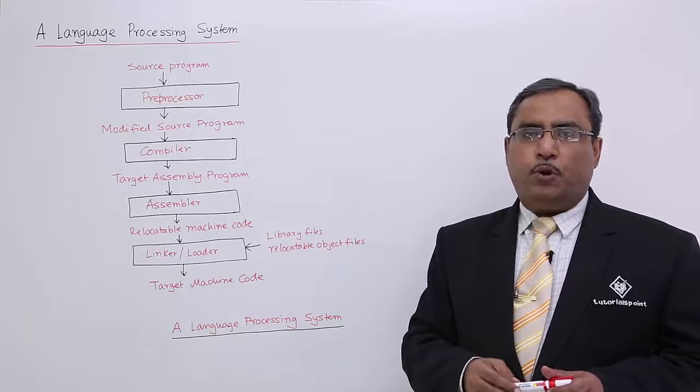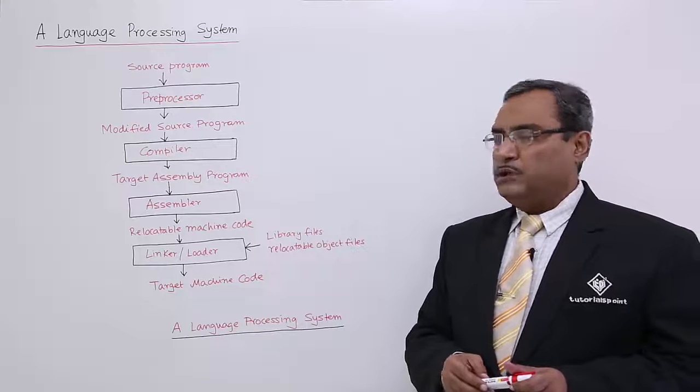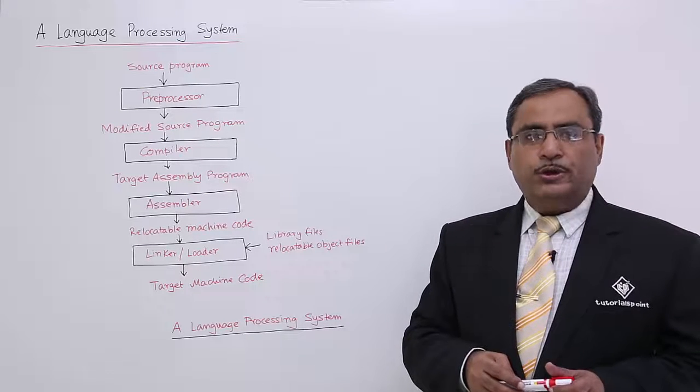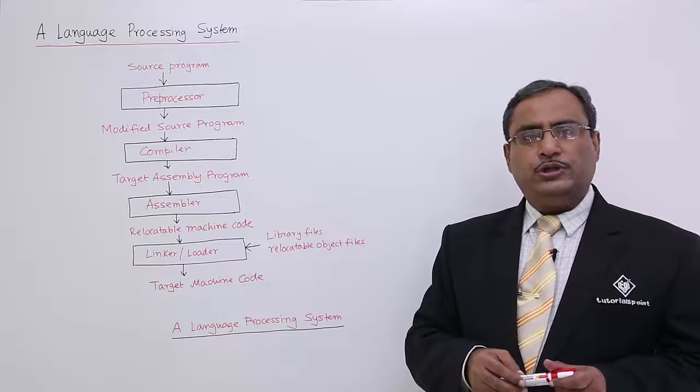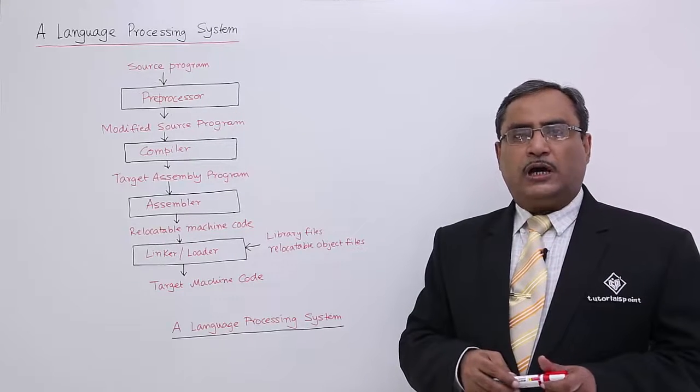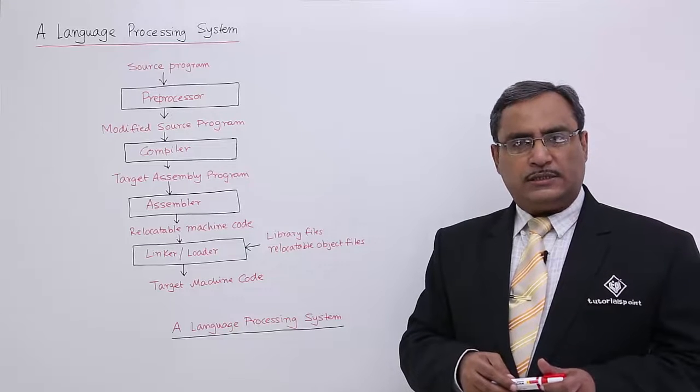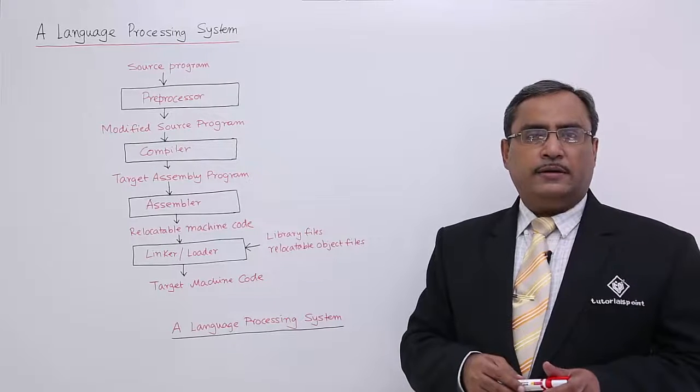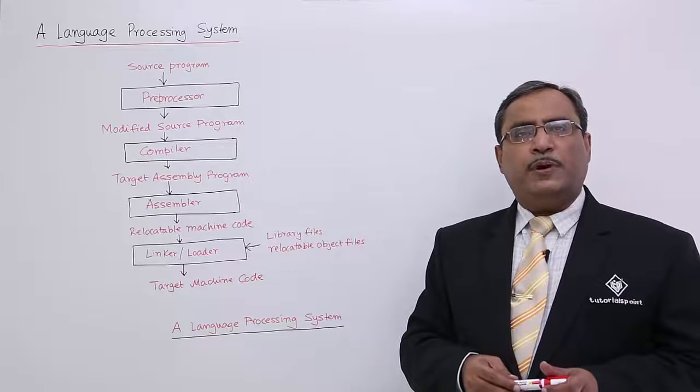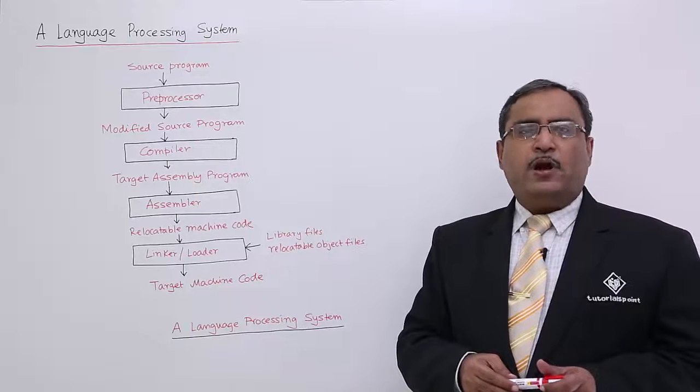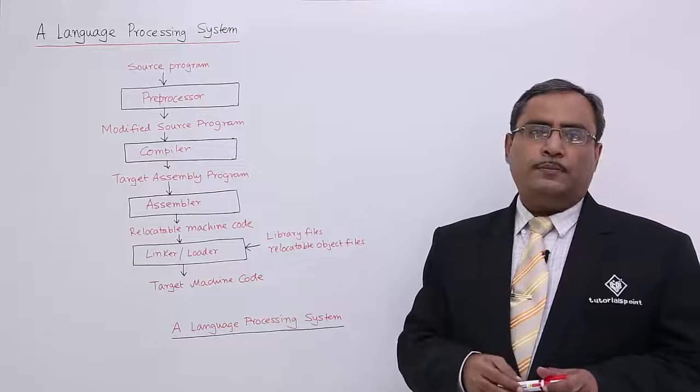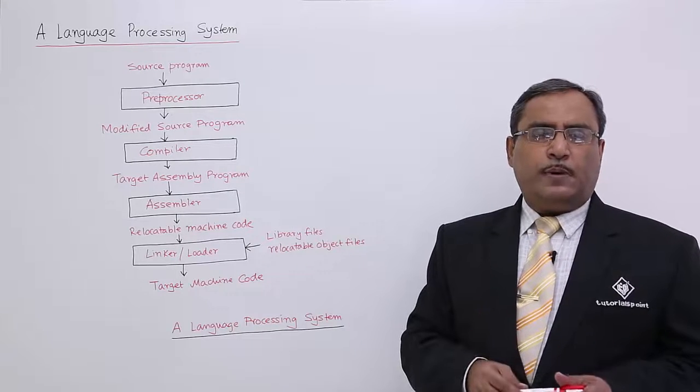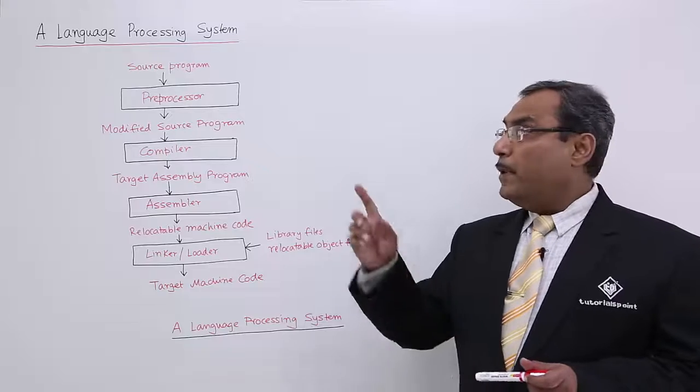I think all of us know C programming. In our C programming, the preprocessor statements will be starting with the character hash. We know that we are having hash include, which will include different header files containing the prototypes of different functions which will be used in my C source program. We are having hash define, say we have written hash define pi 3.14. That means this is a macro. Each and every occurrence of pi throughout the source program will be replaced by 3.14. So, the pi will get expanded by this particular 3.14 value throughout the source program by the preprocessor.